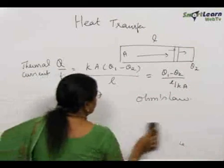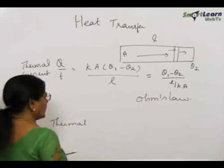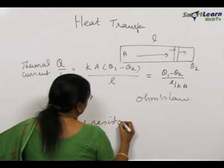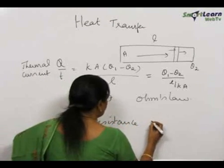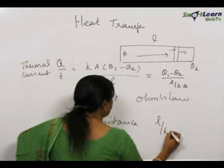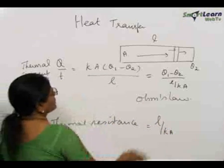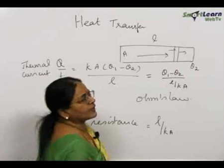The term L by K A corresponds to thermal resistance. So it is L by K A. This is analogous to the flow of the electric current. By analogy we define the thermal resistance.